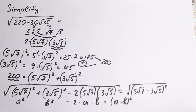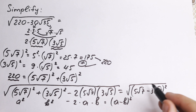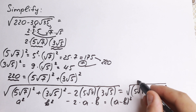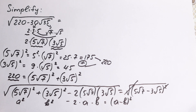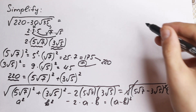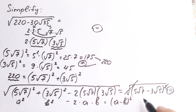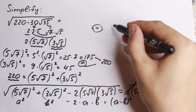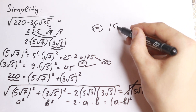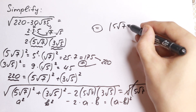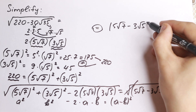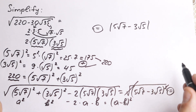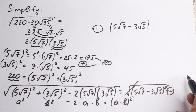And why is this good for us? Because we have a square and a square root sign — we can easily cancel them. And if we cancel this, we get 5 square root of 7 minus 3 square root of 5.